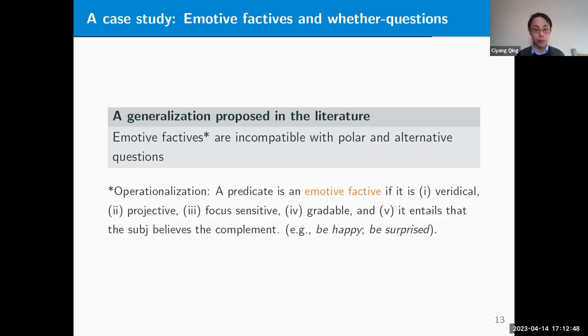Here is a generalization proposed in the literature, according to which emotive factives are incompatible with polar and alternative questions. Before we can evaluate this generalization cross-linguistically, we need to first determine what counts as an emotive factive predicate. There's no exact consensus in the literature, but this is the operationalization we adopted: a predicate is an emotive factive if it has the following properties. Some examples would include be happy or be surprised.